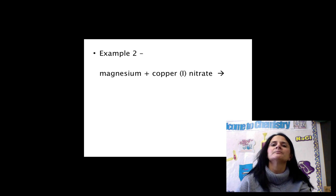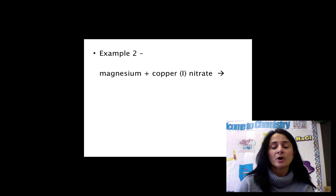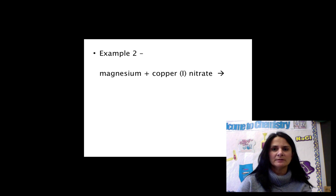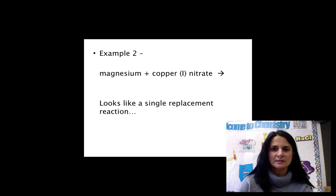Moving on to example 2. In this particular reaction, we have magnesium and we have copper 1 nitrate. What kind of reaction do you think this might be? You have a single element, magnesium, and then you have a compound, copper 1 nitrate. Looks like a single replacement.